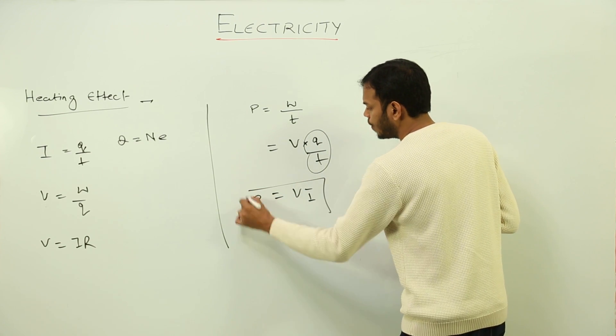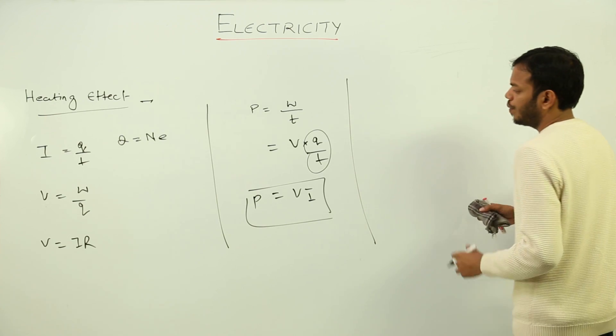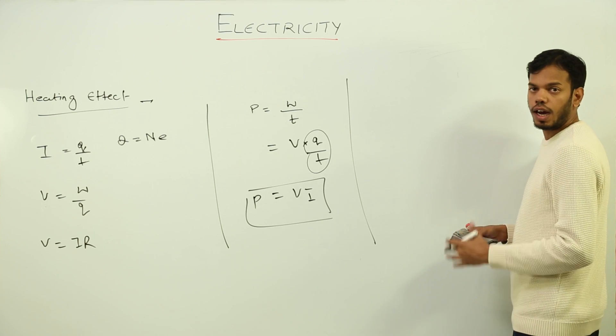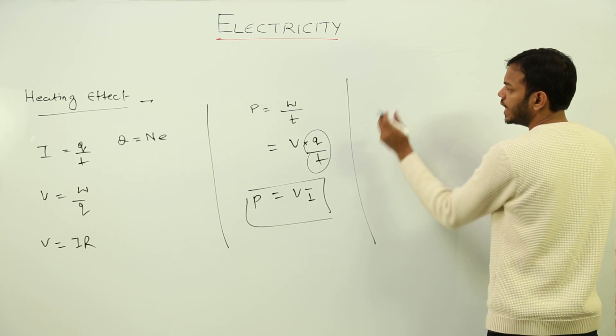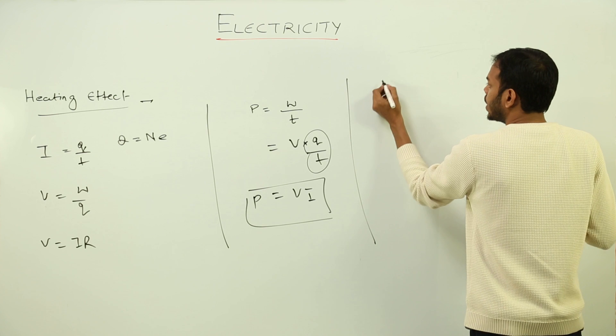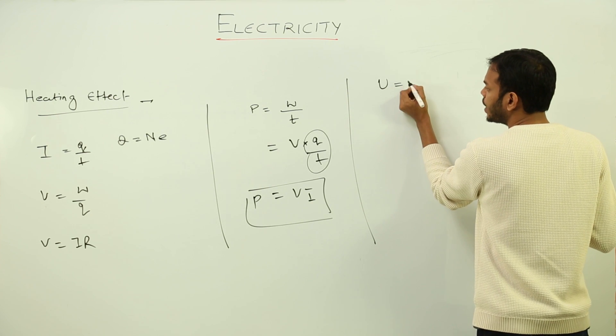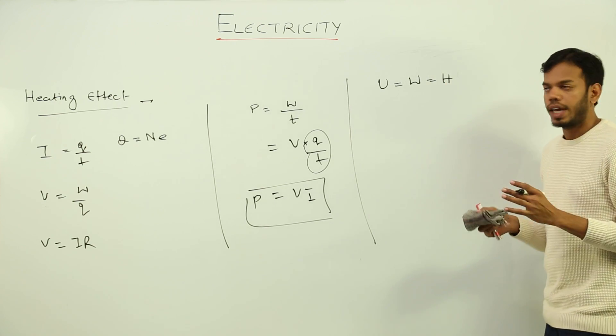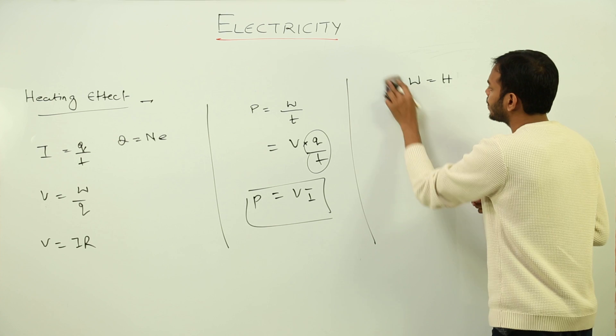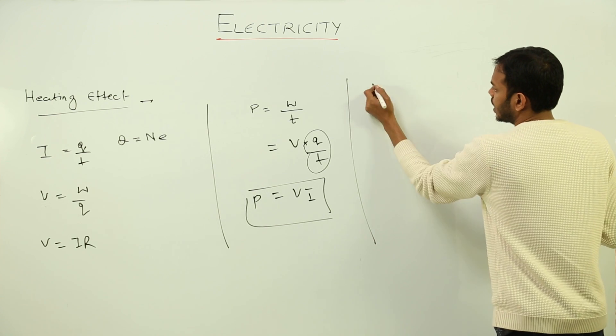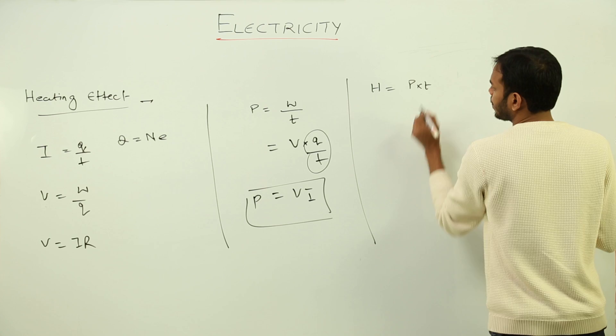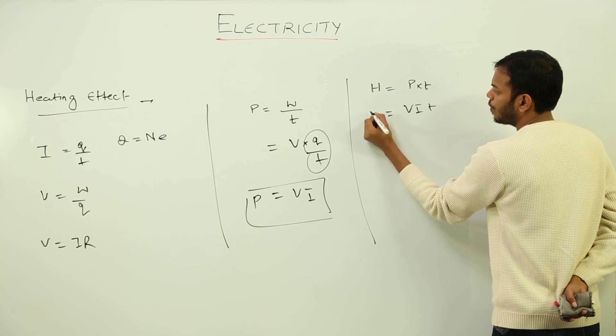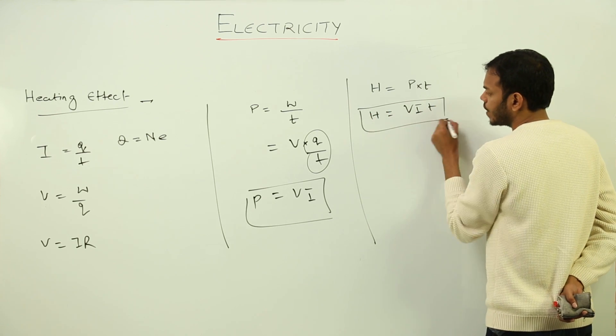What is work? Work is potential into charge, so it will give me V into Q upon T. But Q upon T is what? Current. So power is V into I. This is the formula for power. Now work done - we have a formula for power now, V into I. Right now I am looking for heating effect, which is basically energy. So energy is power into time. So this is one of the formulas for heat generated in a conductor.